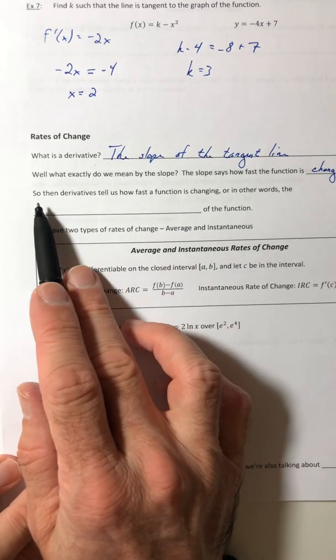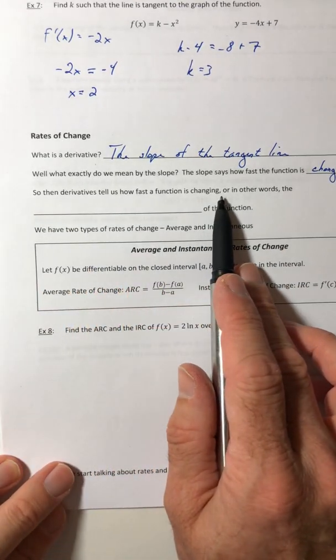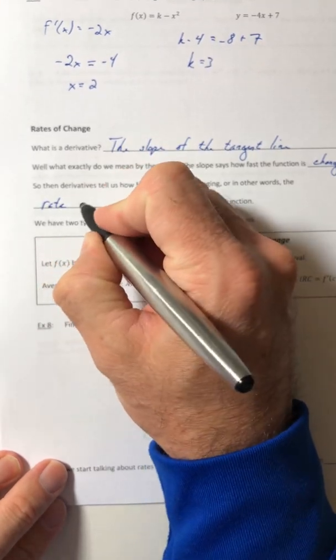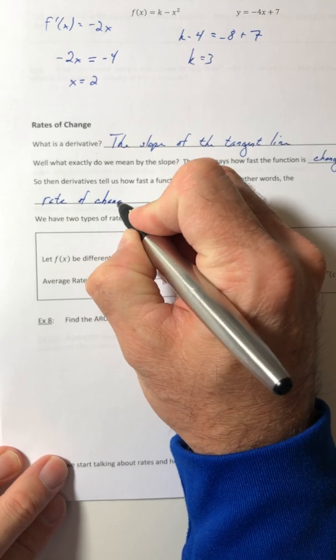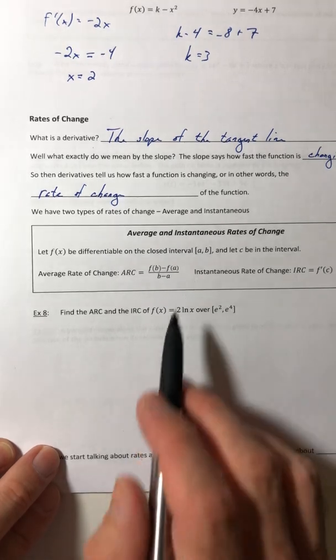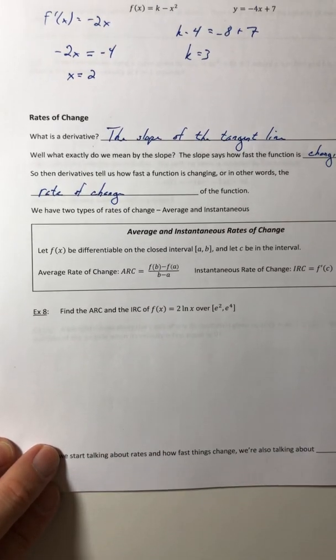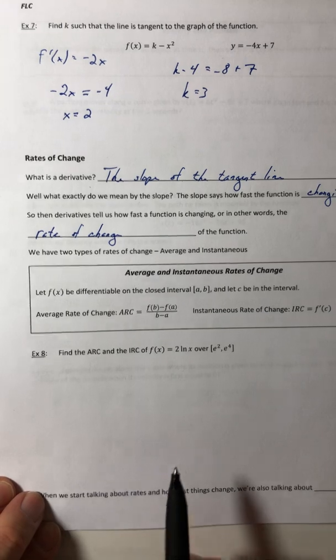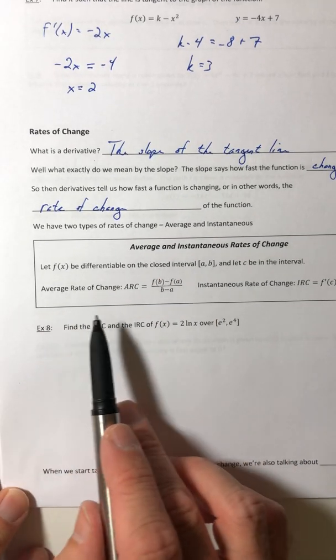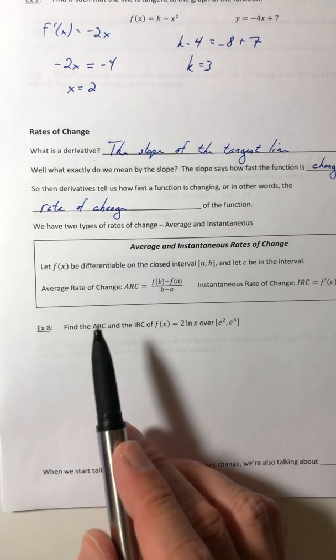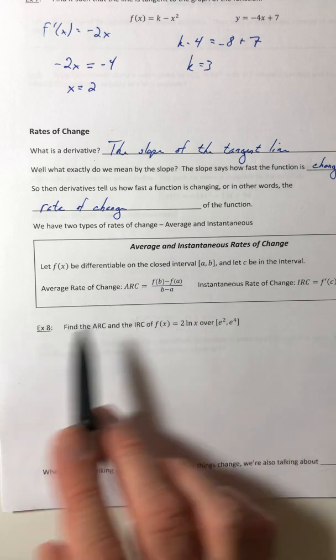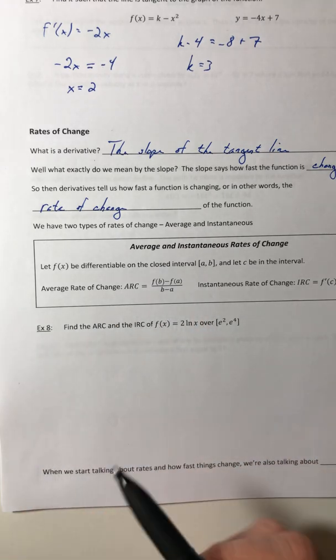So then the derivative tells us how a function is changing, or in other words, the rate of change of the function. So we have two types of rates of change. We have average, and we also have instantaneous. So average rate of change, we've looked at before in your previous classes, whether it was algebra two, math 120, precalculus, math 370, wherever you took that, you saw what an average rate of change was.